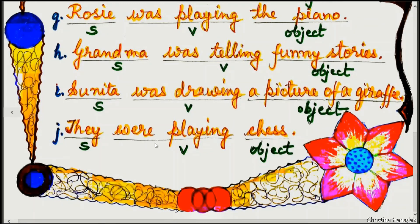Example J: They were playing chess. 'They' is the subject, 'were playing' is the verb with additional -ing, and 'chess' is the object. Thank you.